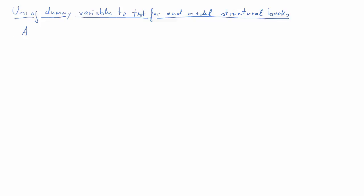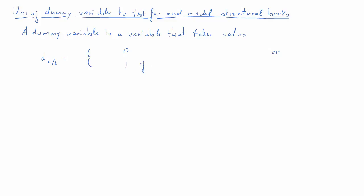In this clip I'll explain how to use dummy variables to model and test for structural breaks. Dummy variables are variables that take values of either 0 or 1. We shall call the variable d_i or d_t depending on whether we are talking about cross-sectional or time-series variables. Which value the dummy takes depends on whether a certain condition is met or not. If it is, it takes the value 1; if not, it takes the value 0.